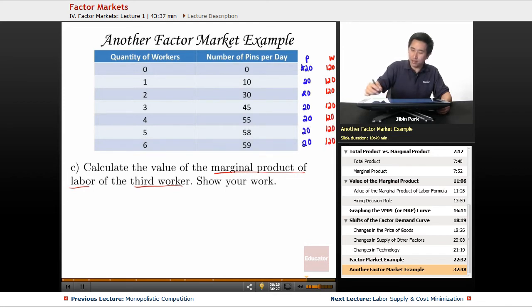How do you find the MPL? It's pretty easy. The MPL—the first one there's a dash, then it would be 10, then 20, then 15, 10, 10, 3, and then 1.